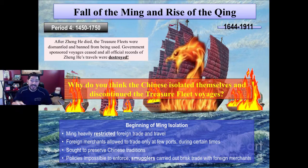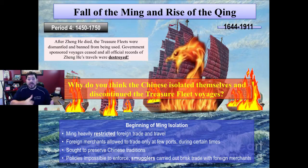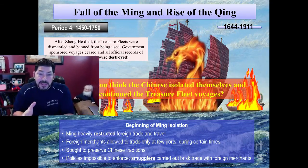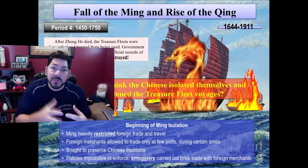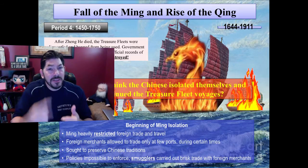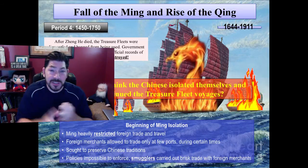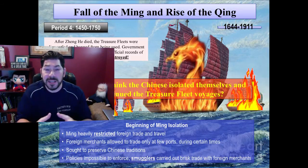Why do you think the Chinese isolated themselves and discontinued the treasure fleet voyages? We'll talk about that in class. Right now, we are going to say that move certainly led to the decline of the Ming Dynasty. They began to isolate themselves, regulate trade very strictly, regulate the ports, thus creating a situation for smugglers and corruption that would ultimately hurt the Ming economy.